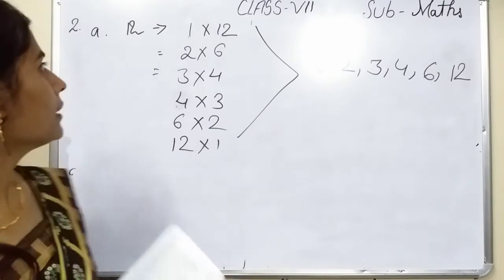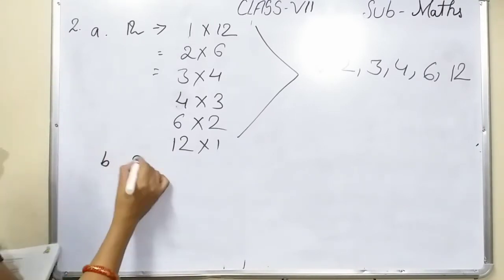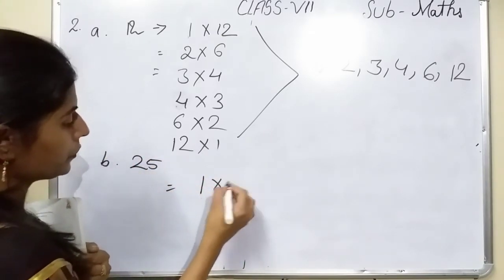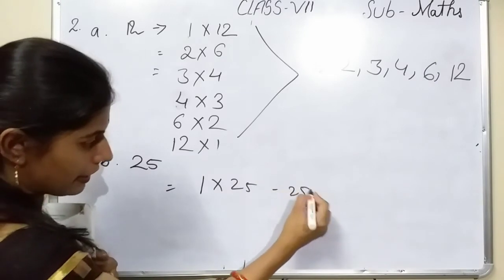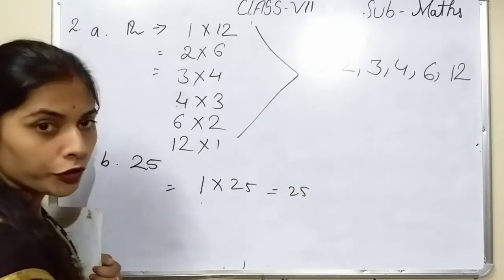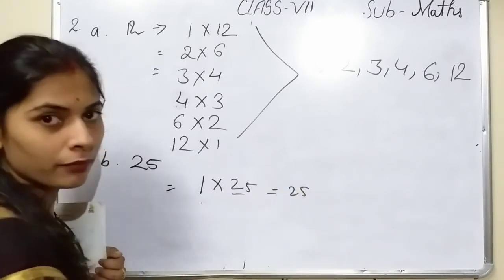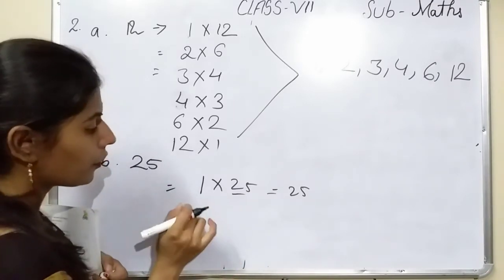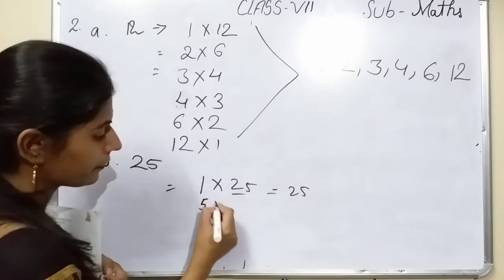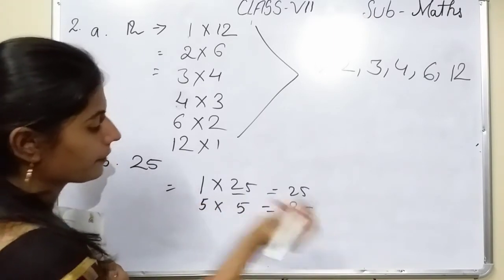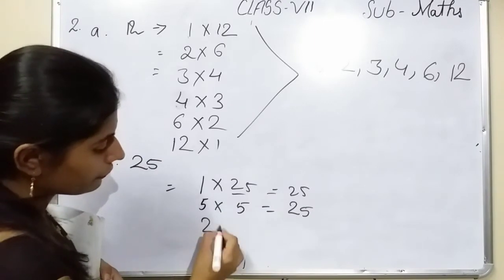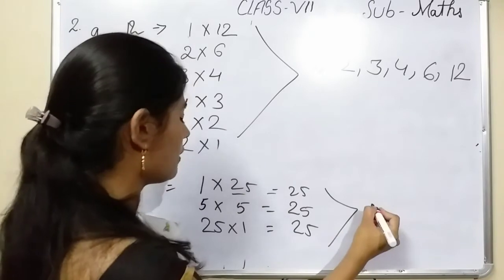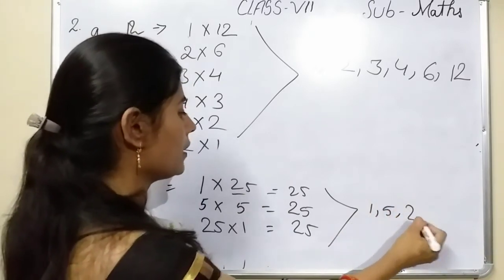Question B: which are the factors of 25? We write: 1×25=25. Since 25 is an odd number, 2 will not divide it, and 3 and 4 also will not work. But 5×5=25 and 25×1=25. So the factors of 25 are 1, 5, and 25.